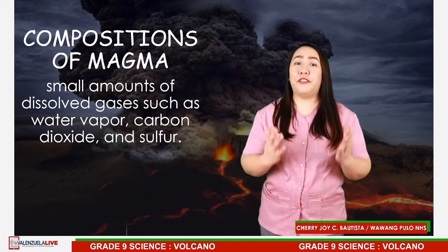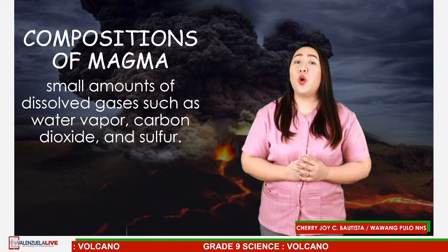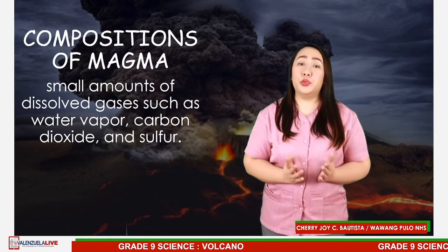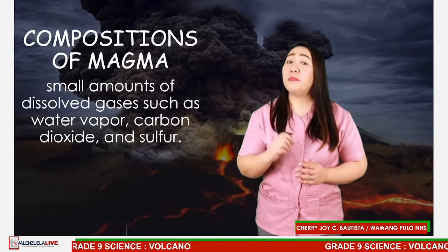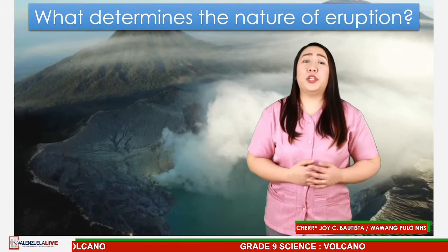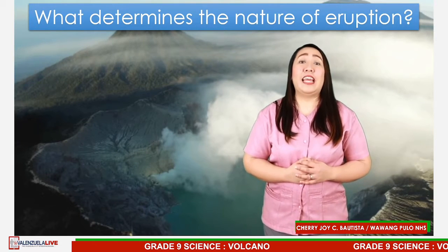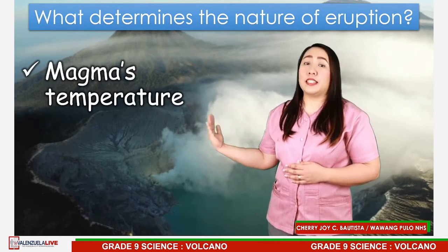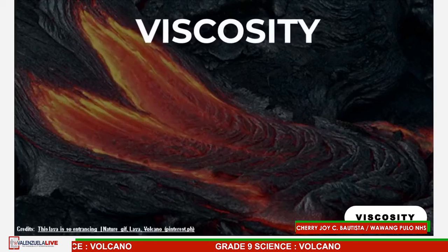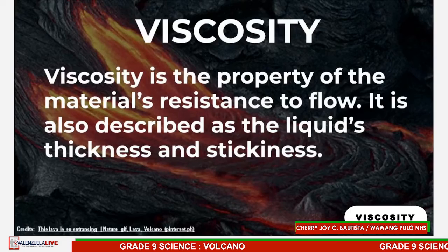Volcanic activity can be very fascinating. After an explosive eruption, a scenic cone-shaped structure may be produced, or changes on its slope can be observed. The emissions of a volcano provide us with clues on what materials are found inside the Earth. Some eruptions are very explosive while many others are not. What determines the nature of eruption? There are primary factors affecting the volcano's eruptive style: the magma's temperature and its chemical composition. These factors can affect the magma's viscosity in different ways.